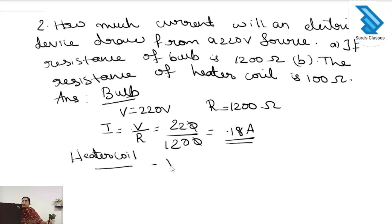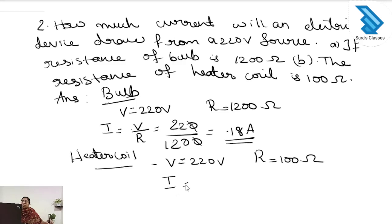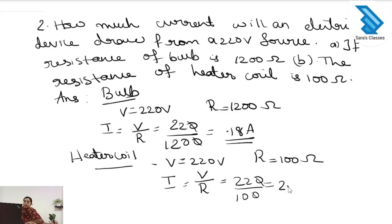Next, for the heater coil: the voltage is also 220 volt and the resistance of the heater coil is 100 ohm. Using I = V/R, it is 220 divided by 100, which gives 2.2 ampere.